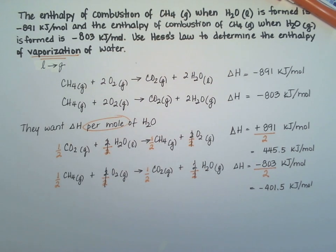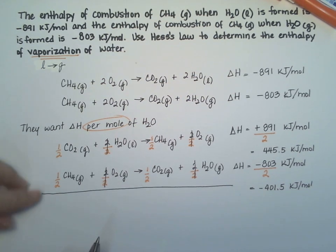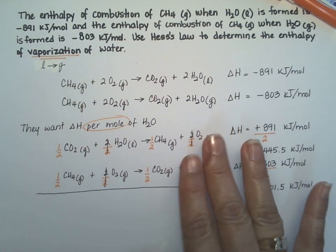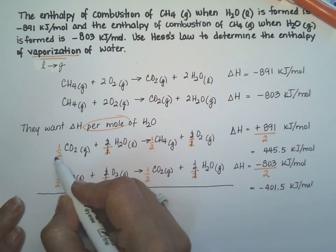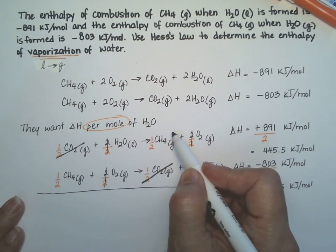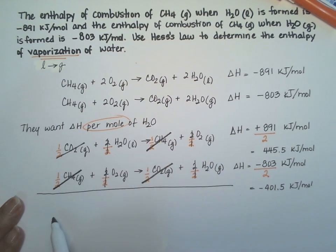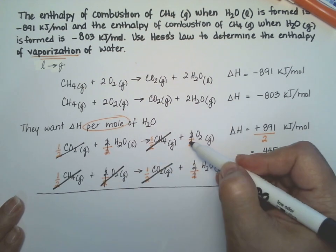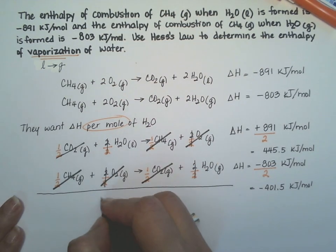Now we need to add the two equations. So let's see what cancels. Half a CO2 gas cancels with the half a CO2 gas over here. The half methane over here cancels with the half methane over there. And the oxygen over here cancels with the oxygen on the other side. Notice that the only two things that are left are water.